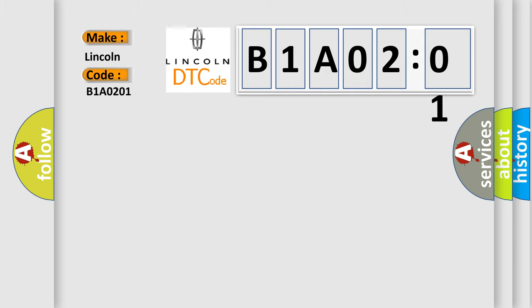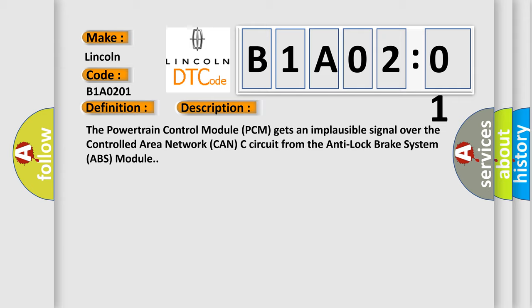The basic definition is Wheel speed signal right front rationality. And now this is a short description of this DTC code. The powertrain control module PCM gets an implausible signal over the controlled area network CAN-C circuit from the anti-lock brake system ABS module.